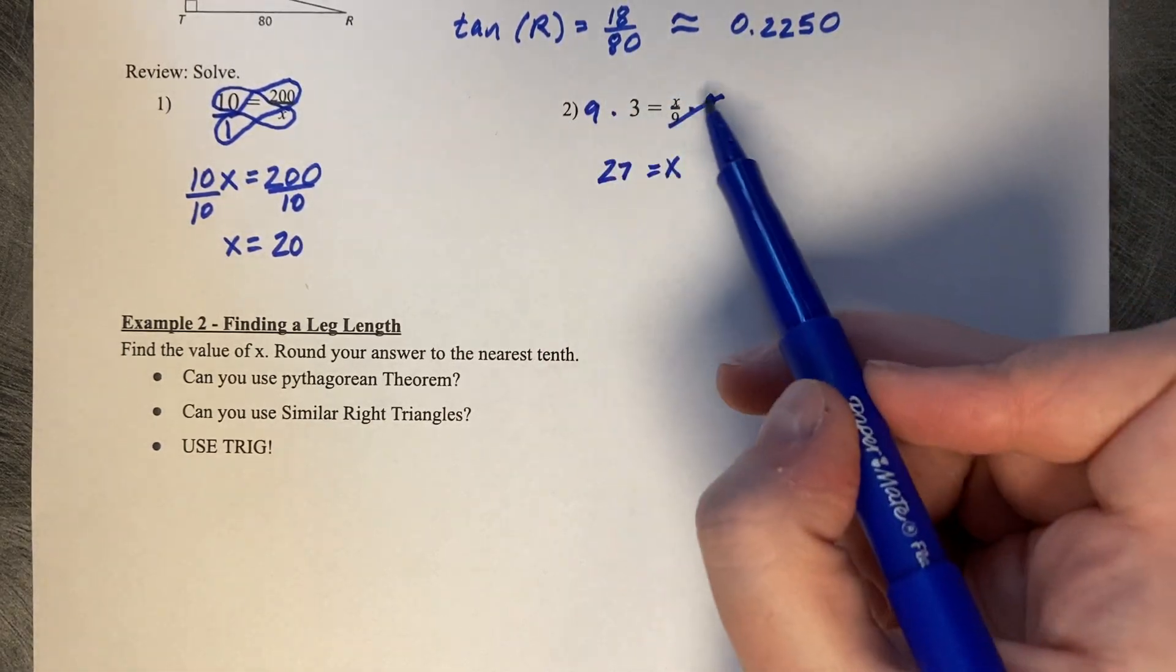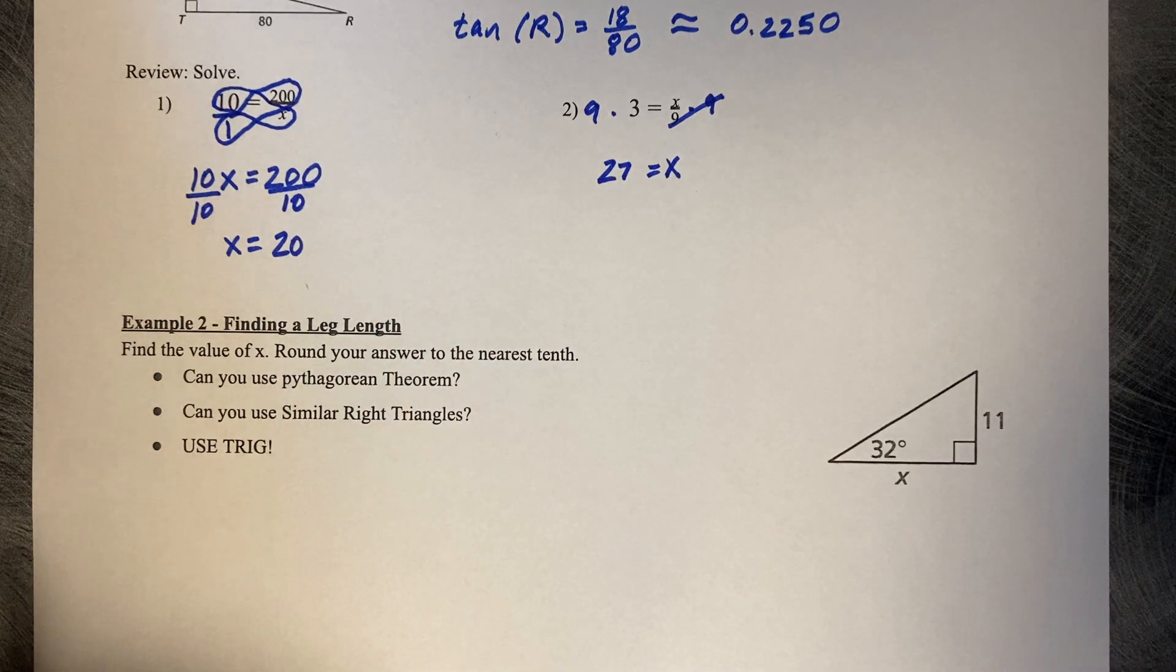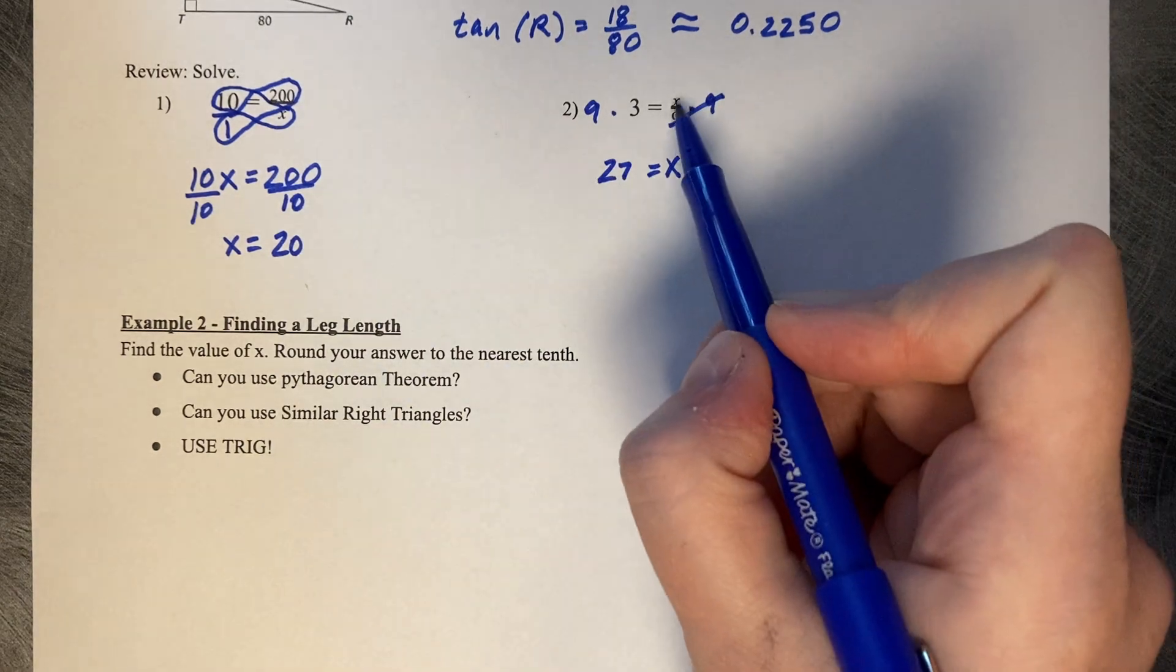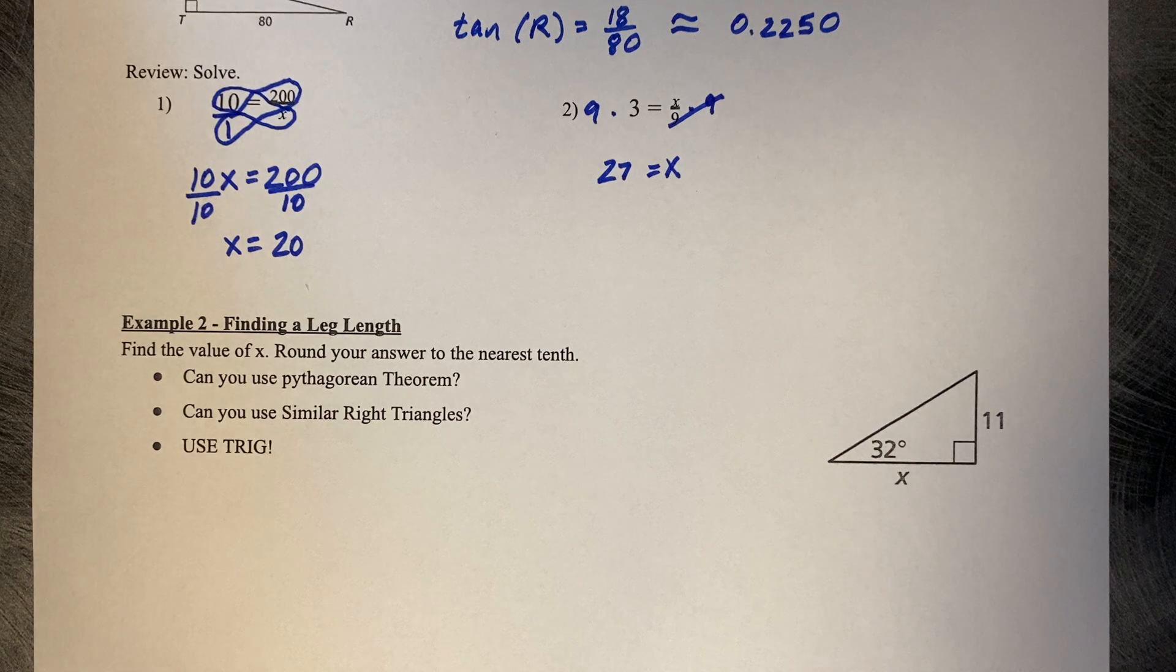On a problem like this where the x is in the numerator, you just need to multiply by your denominator value to eliminate that value.